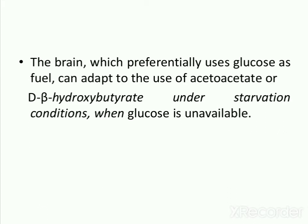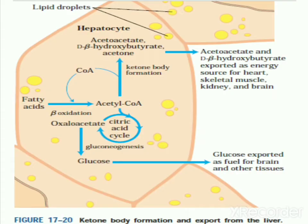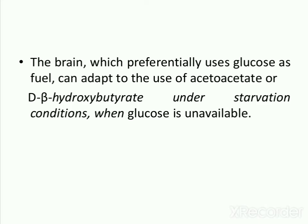The brain, which preferentially uses glucose as fuel, can adapt to the use of acetoacetate or d-beta-hydroxybutyrate under starvation conditions when glucose is unavailable. The production and export of ketone bodies from the liver to extra-hepatic tissues allows continued oxidation of fatty acids in the liver when acetyl-CoA is not being oxidized in the citric acid cycle.